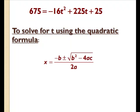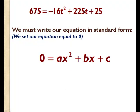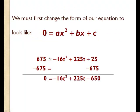So before we begin using the quadratic formula, we have to rearrange our equation. We must rewrite it in standard form, or you could say we can just set our equation equal to zero. So to do that, I'm going to subtract the 675 from both sides and that will leave me with zero equals, or you could say my equation is now in the standard form.